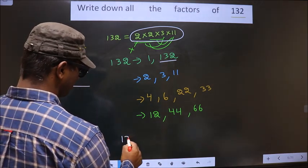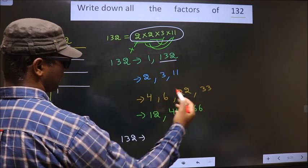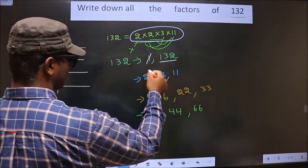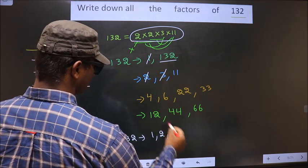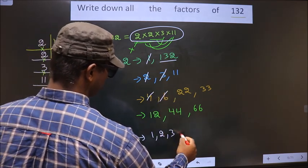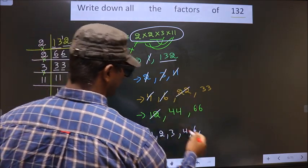So the factors of 132 are all these numbers. That is 1, 2, 3, 4, 6, 11, 12, 22.